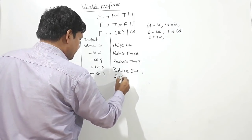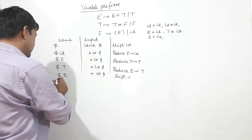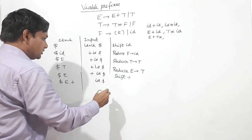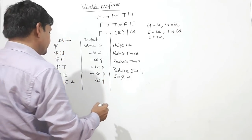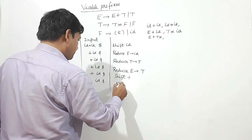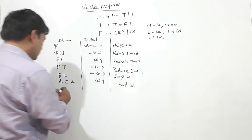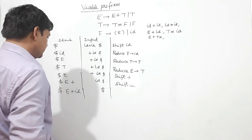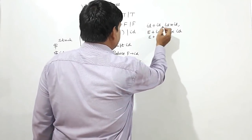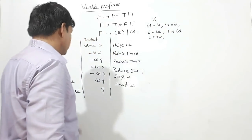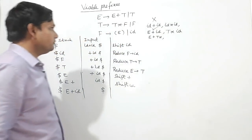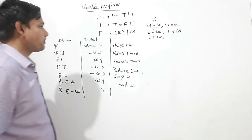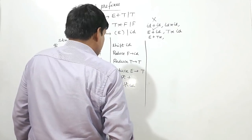Now I will shift plus, because there is a match of plus and E — so dollar E plus, ID dollar. E plus cannot be reduced by anything, so I will shift ID also, giving dollar E plus ID, nothing remaining on input. I can see here: ID plus ID is not a viable prefix, but E plus ID is a viable prefix.